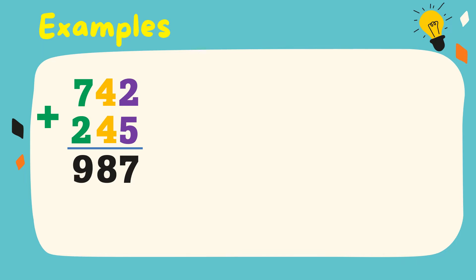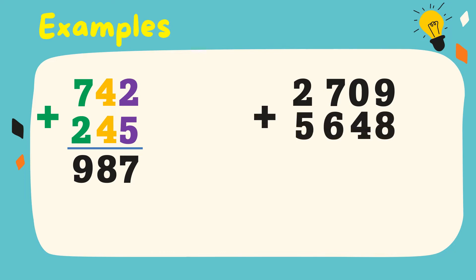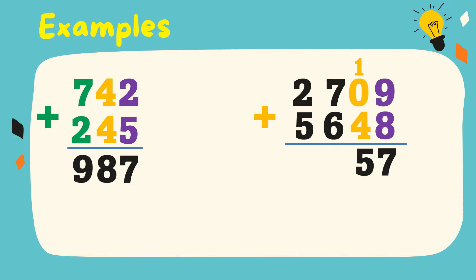So the sum is equal to 987. Another example: 2,709 added to 5,648. We're going to add from right to left. 9 plus 8 is equal to 17. Write 7, regroup 1. 1 plus 0 is equal to 1, plus 4 is equal to 5. 7 plus 6 is equal to 13. Write 3, regroup 1.